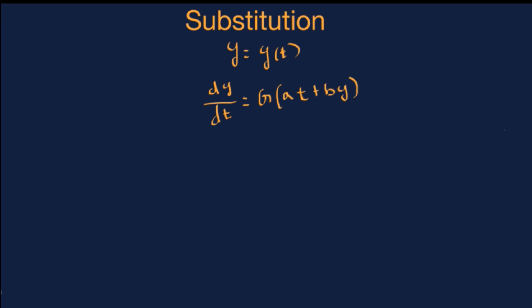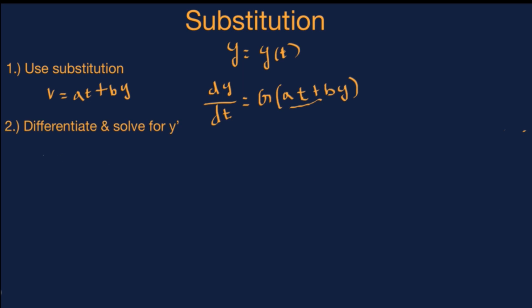The way we solve such an equation is by converting it to a separable differential equation using substitution. So we can say that v is equal to this linear combination a times t plus b times y. And when we differentiate this, we get the derivative of v with respect to t is equal to a plus b times the derivative of y with respect to t.